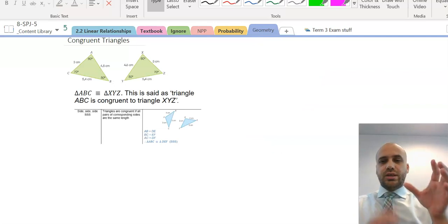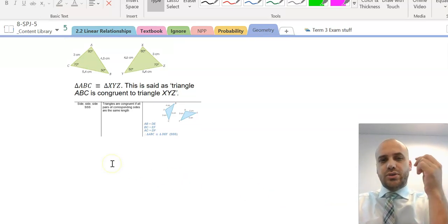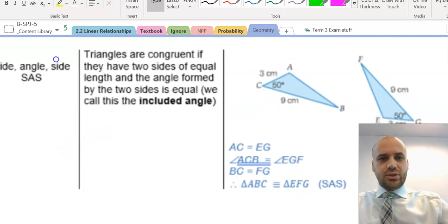Now, the next one here is called the SAS rule. If you know two sides and what's called the included angle, you'll know that those triangles are congruent. Let's check this out and zoom in on it so we can see.